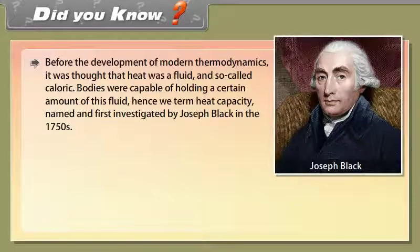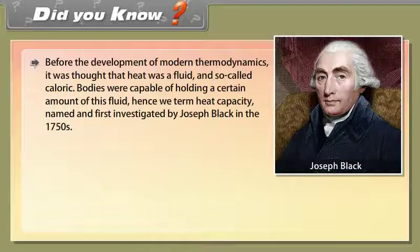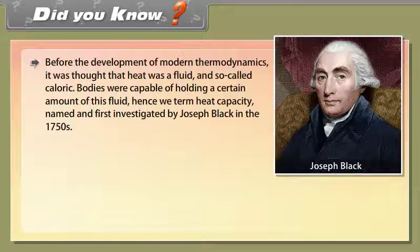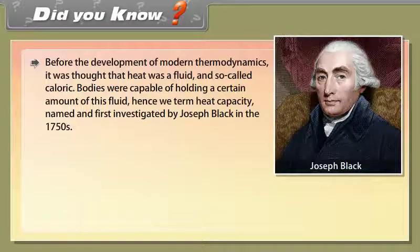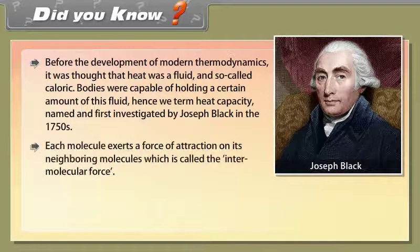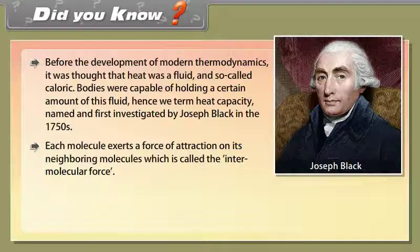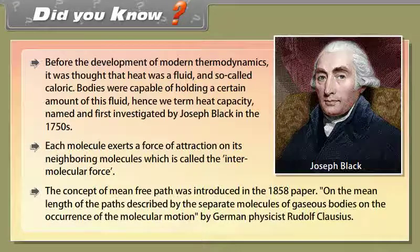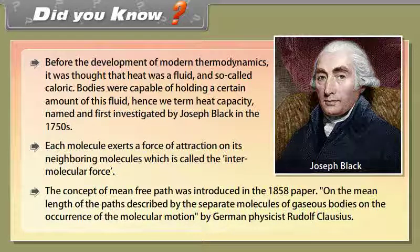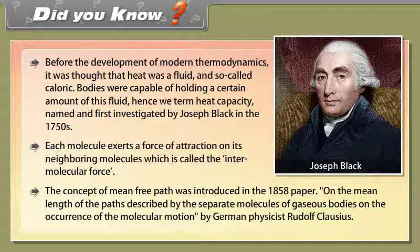Did you know: Before the development of modern thermodynamics, it was thought that heat was a fluid and so-called caloric. Bodies were capable of holding a certain amount of this fluid. Hence we term heat capacity, named and first investigated by Joseph Black in the 1750s. Each molecule exerts a force of attraction on its neighboring molecule which is called the intermolecular force. The concept of mean free path was introduced in 1858 paper On the Mean Length of the Path Described by the Separate Molecules of Gaseous Bodies on the Occurrence of the Molecular Motion by German physicist Rudolf Clausius.